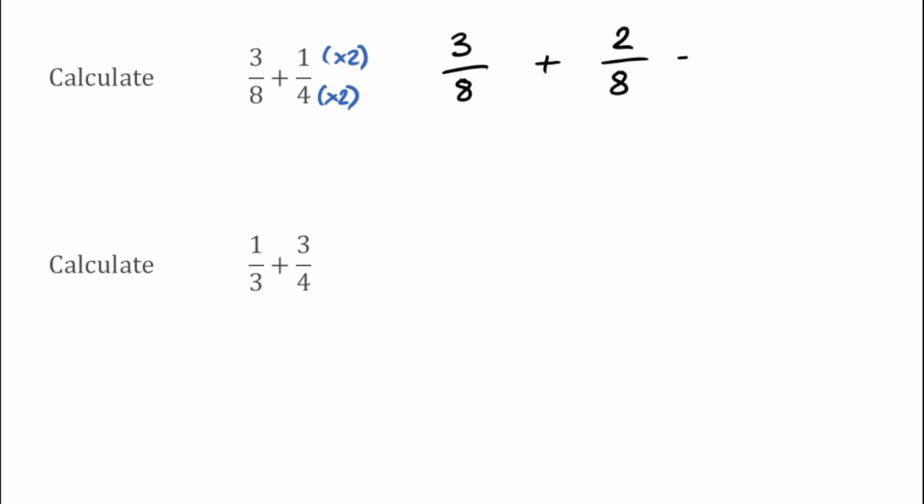Now that these fractions are both over 8, all I have to do is simply add the numerators. So 3 over 8 add 2 over 8 — the denominator is going to stay as 8 — gives us 5 over 8, and that would be our answer to that one.